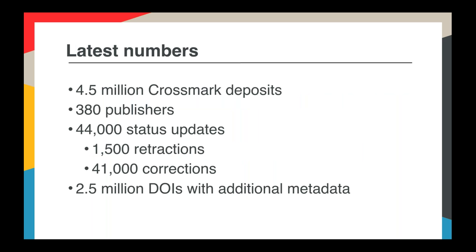To give you some numbers on where we are with Crossmark: we have 4.5 million DOIs with Crossmark buttons on them, coming from 380 different publishers. Within those 4.5 million DOIs, we've got 44,000 status updates - things that are corrections, updates, or retractions. Over 2.5 million of those DOIs have some additional metadata in the More Information box. As a fraction of Crossref content it's not huge, but it's growing steadily, and having Crossmark buttons on 380 different publisher sites is really getting recognition amongst readers.